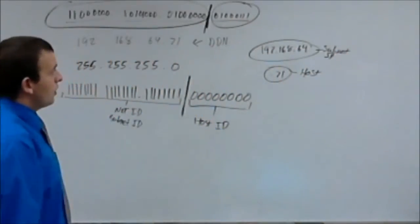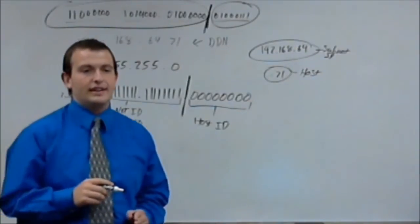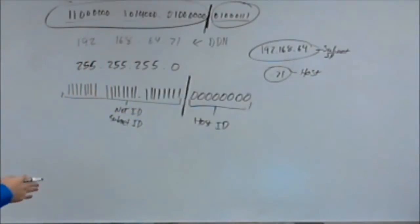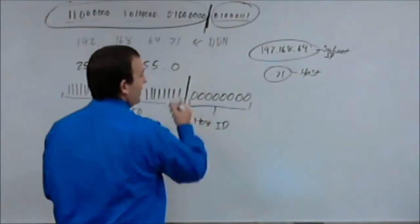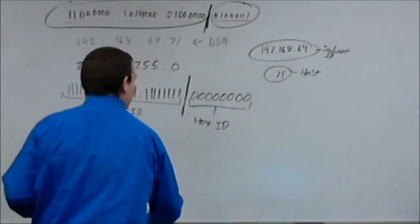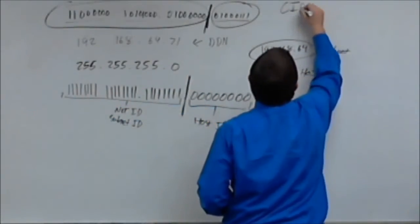So, what subnets do is they identify and separate the network ID and the host ID on a network. Now, another way, this is just standard decimal notation of a subnet mask. The other way you're going to really often see subnet masks written is something called CIDR notation. C-I-D-R.